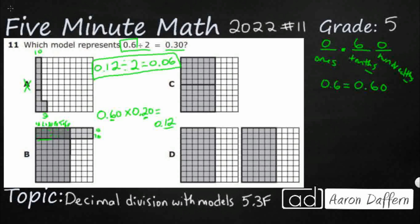We're looking for 6 tenths divided by 2. All right, so let's look at C here. So I've got 10, 20, 30, 40, 50. There's my 60. So I've got 60 hundredths. But remember, we did find that 6 tenths is the same as 60 hundredths.